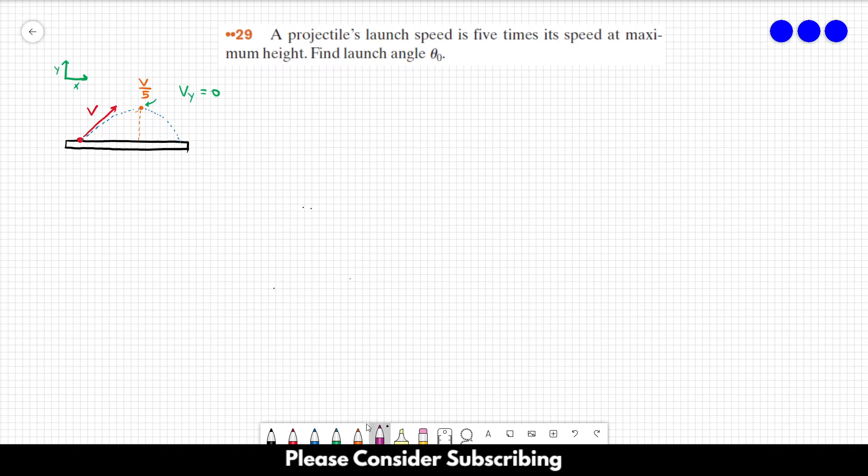So if VY is equal to 0, this speed over here is equal to VX, right? So we know that VX, the speed in the X direction, is equal to V over 5.